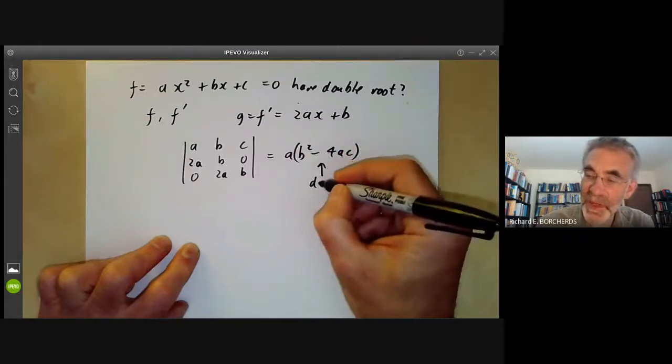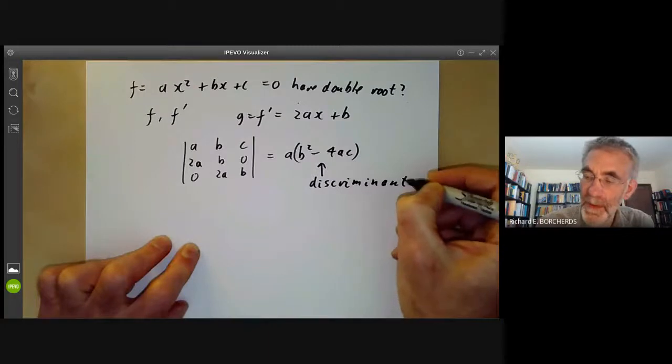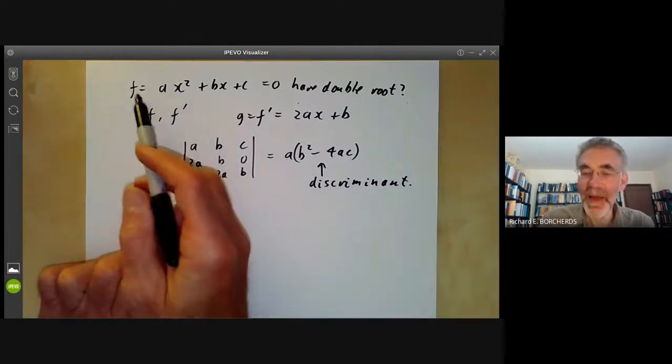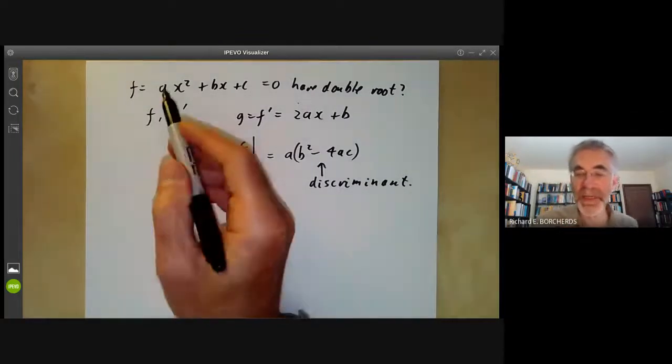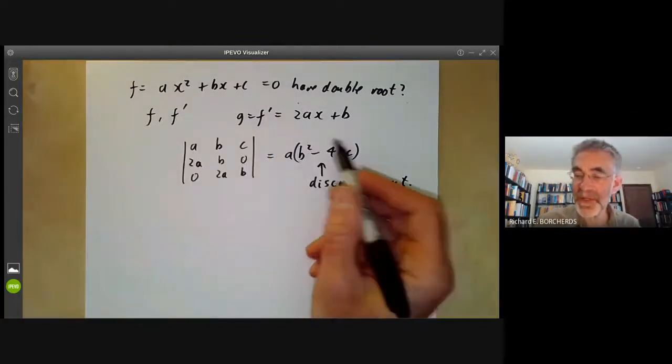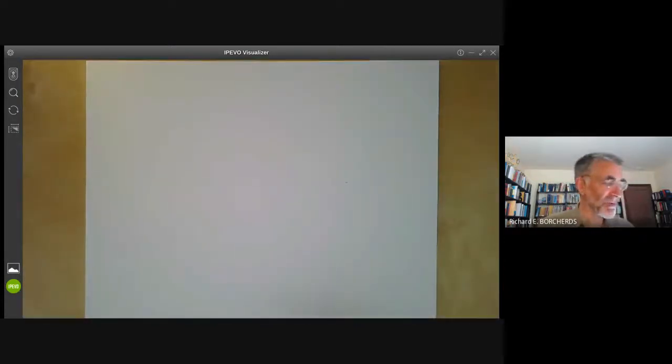And we've also got this possibility a equals 0 because we said that if a is 0, then f and its derivative both have a sort of zero at infinity. So if a is non-zero, then this has a double root if and only if the discriminant is non-zero, which is the result we all remember from high school algebra.